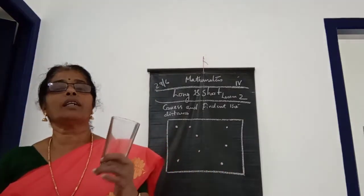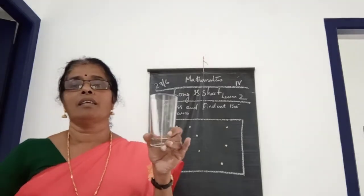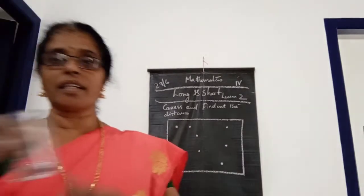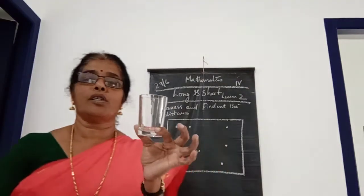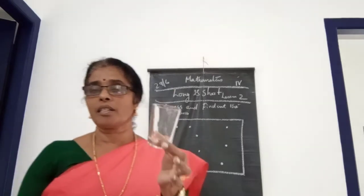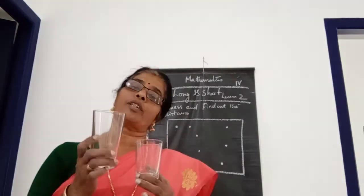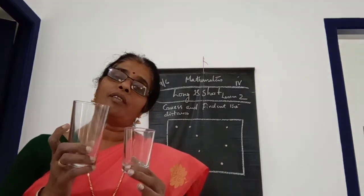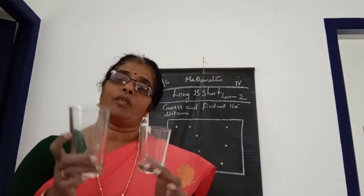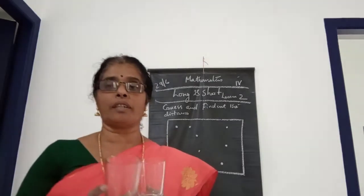You can see one glass here. What is this? Glass. This one is a glass. And what is this? This one also — another glass. Look here, this one is a glass and this one is another glass. What is the difference in these two? One is the long one and this one is the short one.